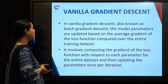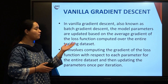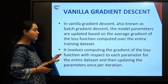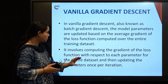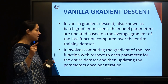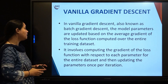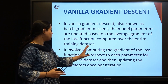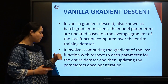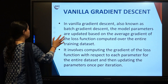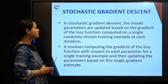In vanilla gradient descent — also called batch gradient descent — the model parameters are updated based on the average gradient of the loss function computed over the entire training dataset. It involves computing the gradient of the loss function with respect to each parameter for the entire dataset and then updating the parameter once per iteration.